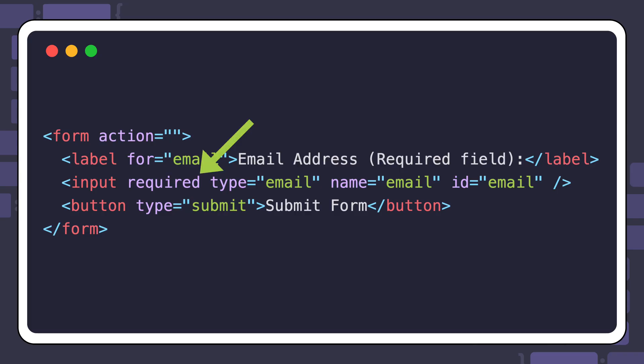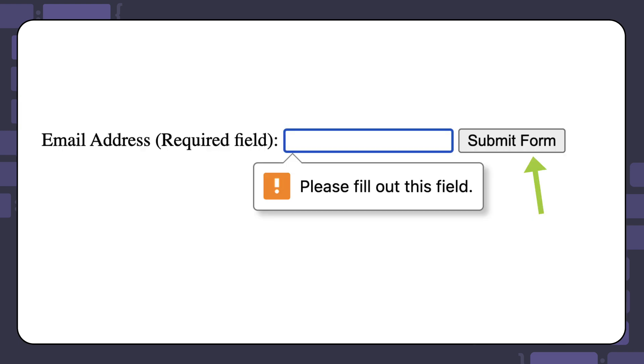One common example of built-in form validation is to use the required attribute in inputs. The required attribute specifies that the user needs to fill out that portion of the form before it gets submitted. Here is an example of using the required attribute in an email input. When the user clicks on the submit form button without supplying an email address, they will be alerted that the field is required and the form will not be submitted. Here is a screenshot of that behavior.